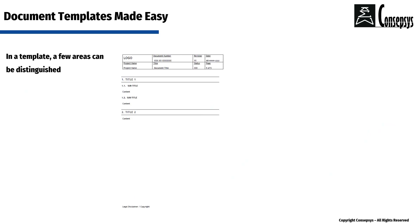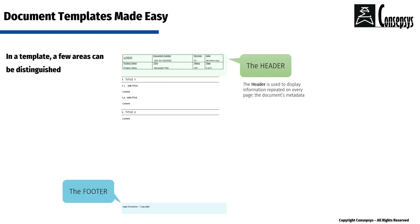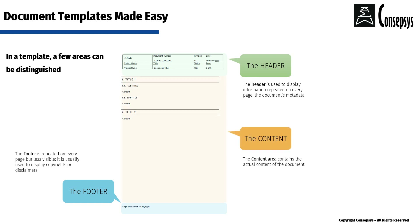In a template, a few areas can be distinguished. We have the header, which is used to display information repeated on every page — that's mostly the document's metadata. We have the footer, which is also repeated on every page but is less visible, so we typically use it to display copyrights or disclaimers. And we have the content area, where the actual content of the document will be written by the author.